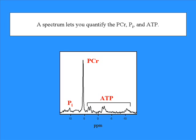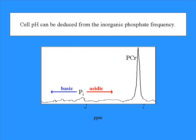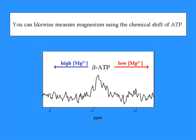Gives the cell all its energy. Cell pH can be deduced from the inorganic phosphate frequency. When you're looking for the cell to find the frequency, you're acting like it's neutral, but it's 7.3. You can likewise measure magnesium using the chemical shift of ATP. That's ATP, that's ATP.